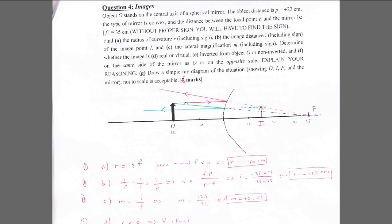You can check with a ray diagram. Take a ray parallel to the central axis — it will be reflected so it intersects f. Then take a ray directed toward f — it will be reflected parallel to the central axis. Continue the virtual ray and find the intersection, which is indeed between 10 and 20, so it makes sense.